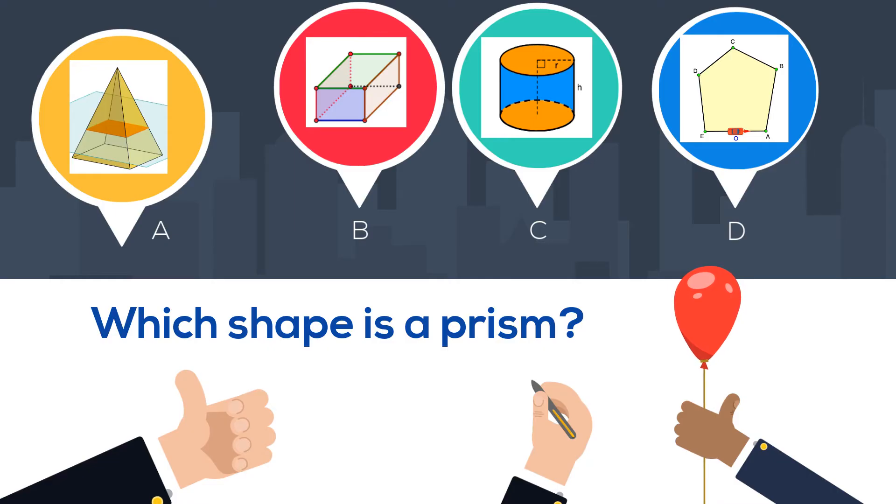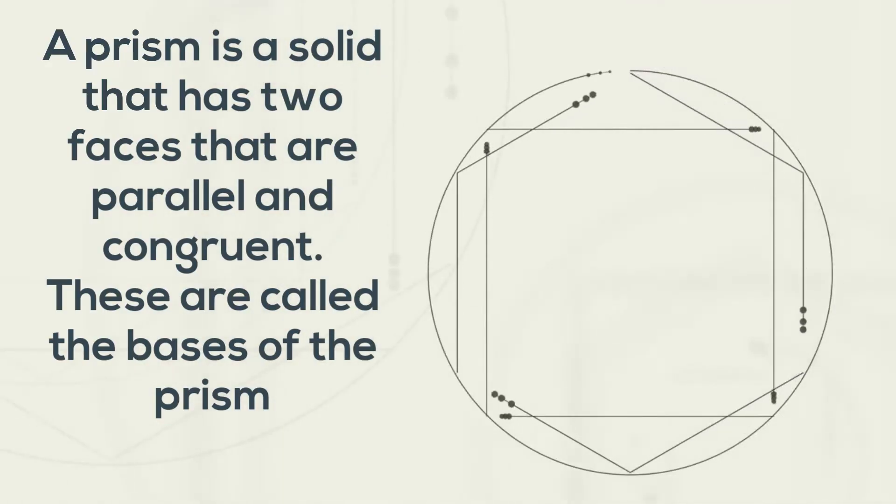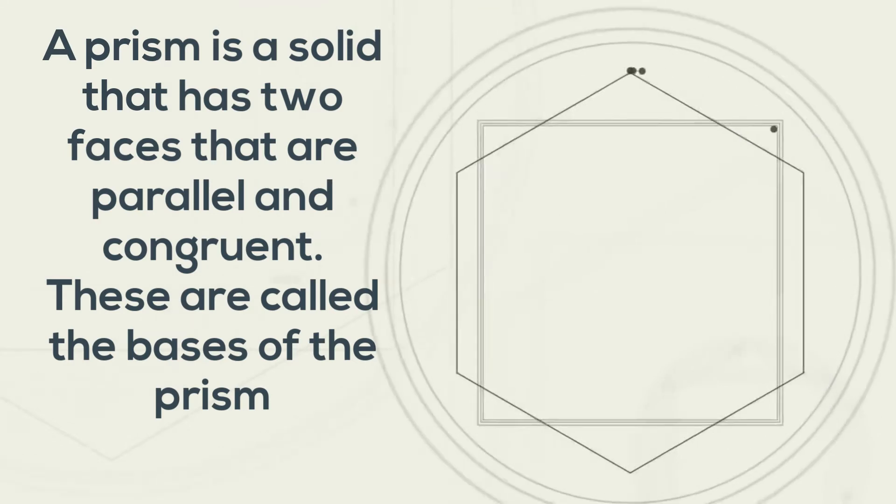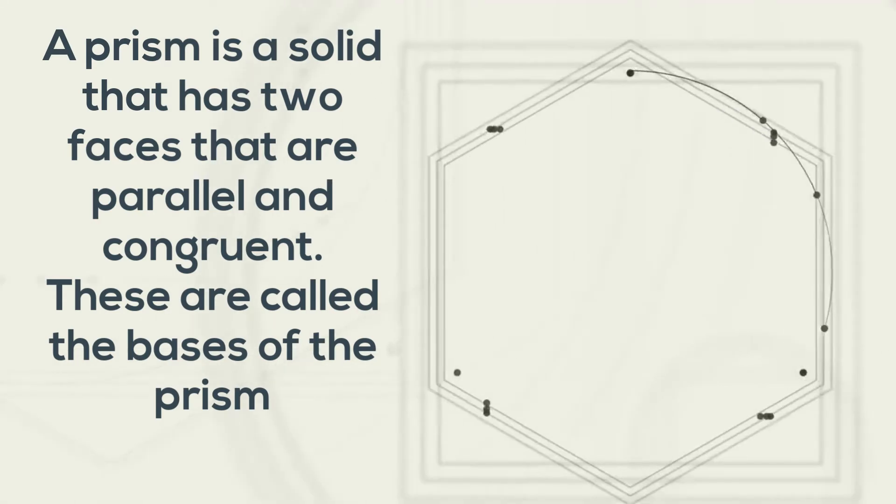Let's first define what a prism is. A prism is a solid that has two faces that are parallel and congruent. And remember, congruent means equals. These are called the bases of the prism.